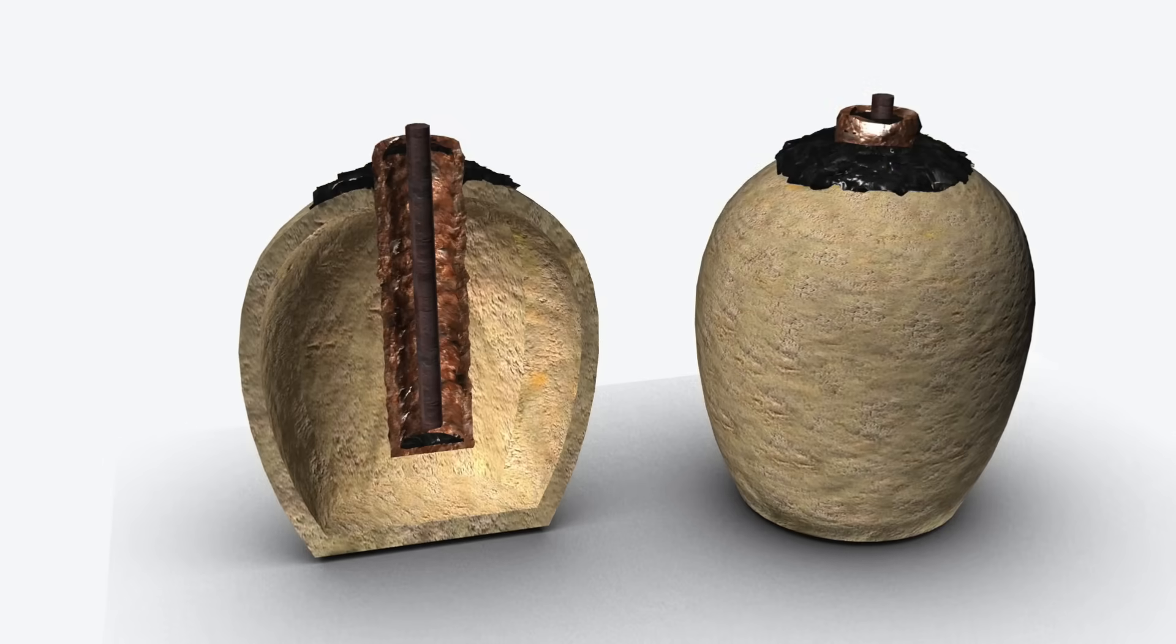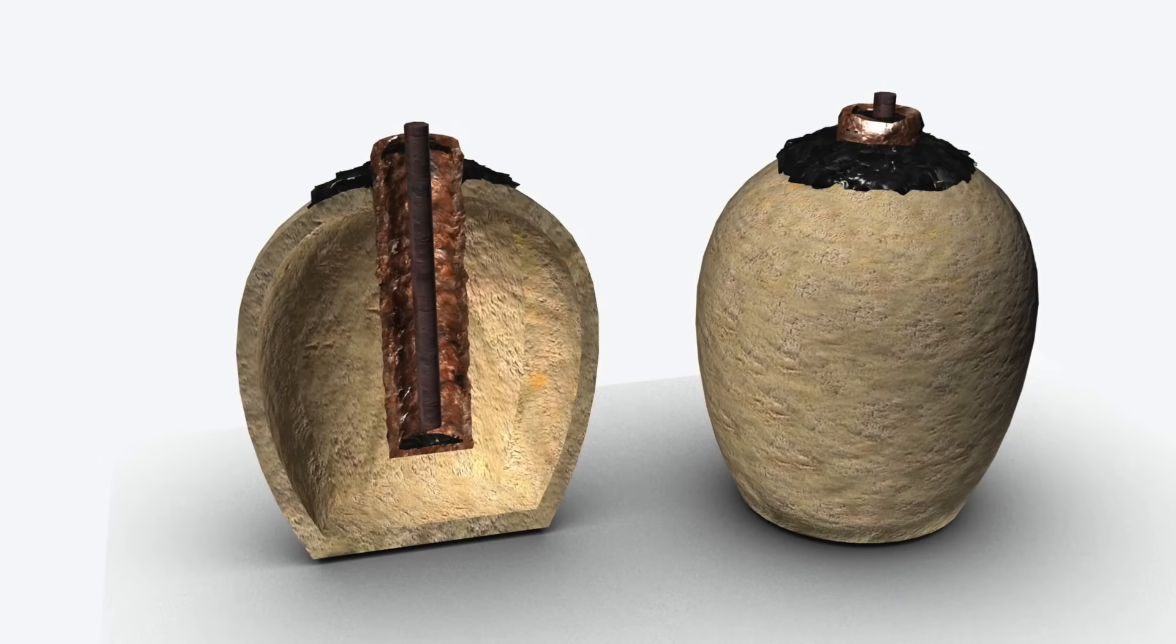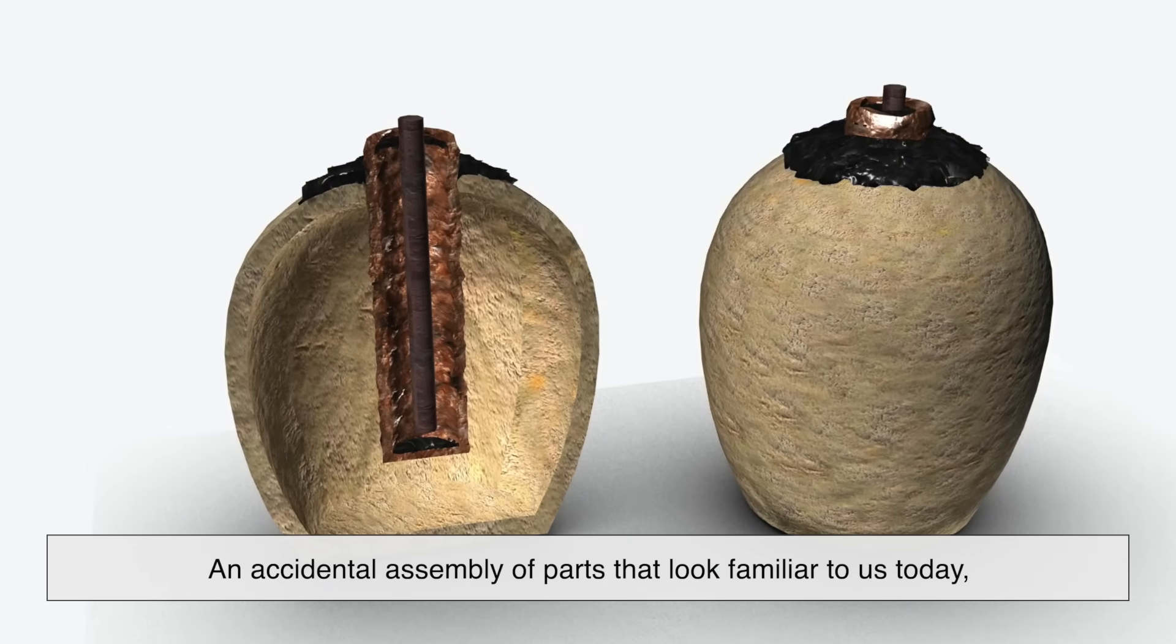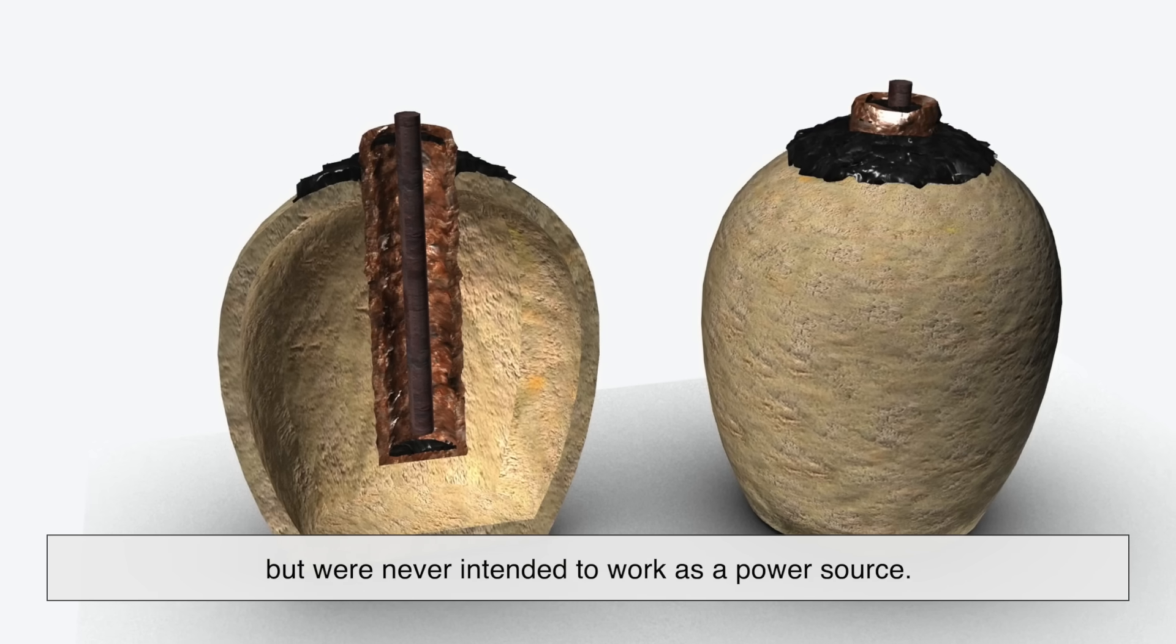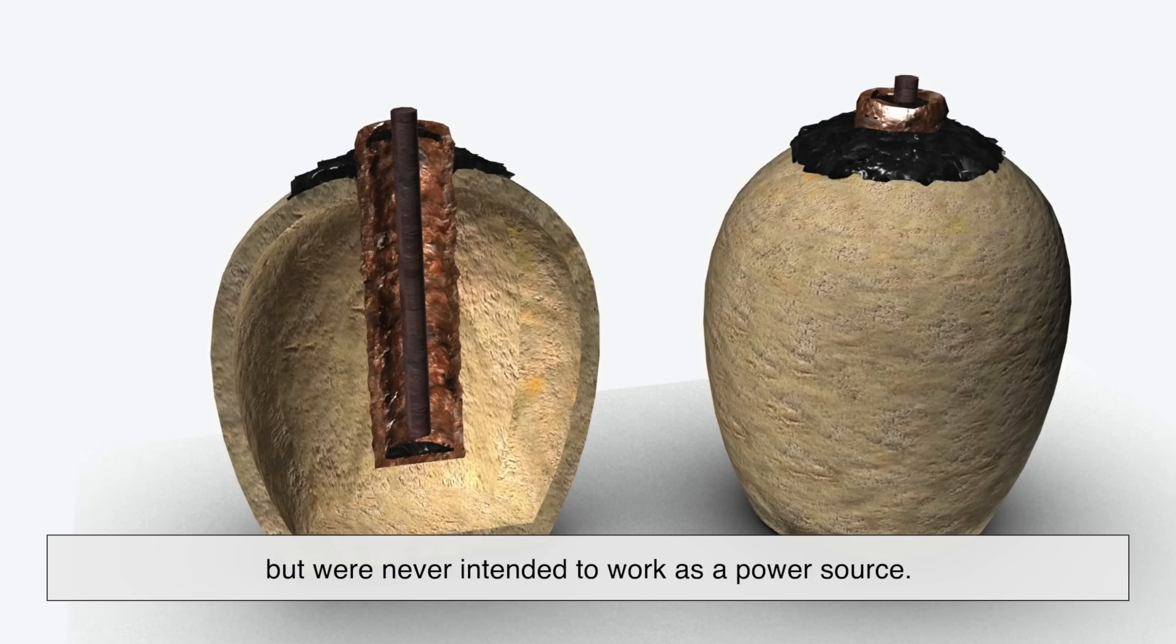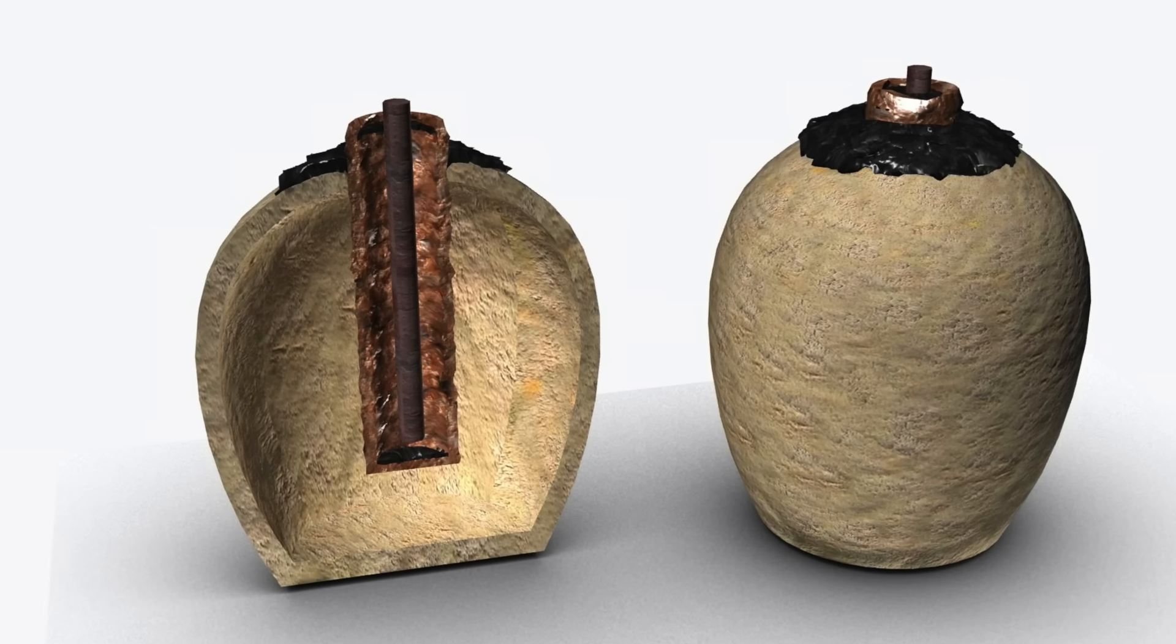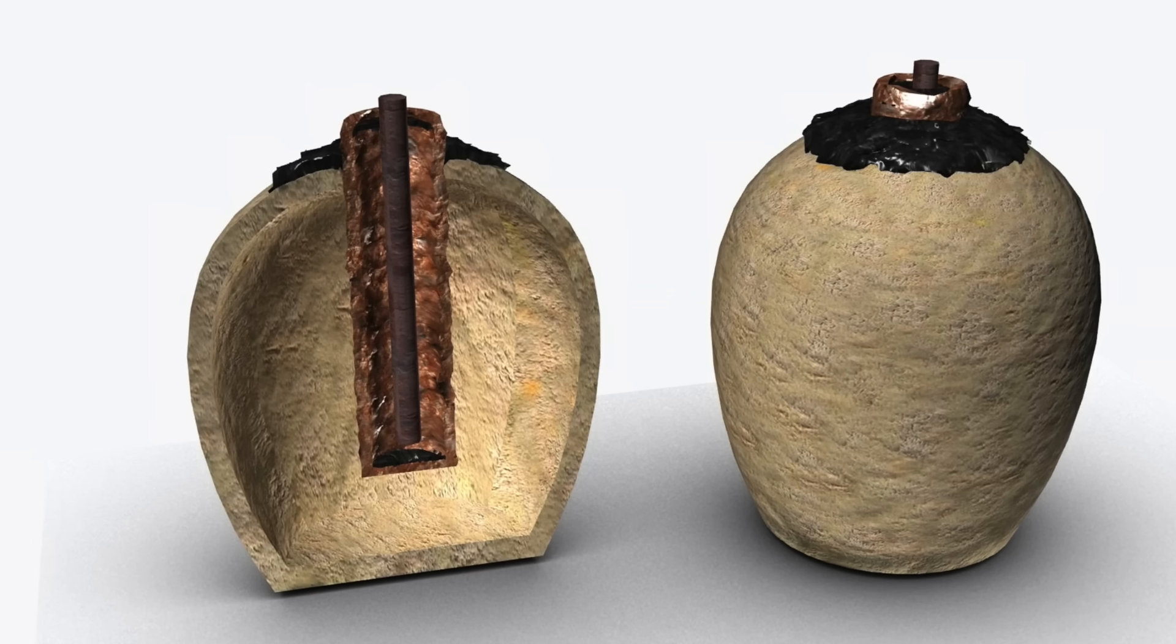To skeptics, the so-called Baghdad battery is more likely an accidental assembly of parts that look familiar to us today, but were never intended to work as a power source. In other words, we might be projecting our modern understanding onto an ancient object.